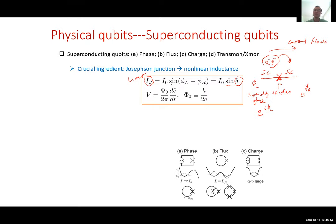If you apply voltage across the junction, the phase difference starts to increase. The voltage is proportional to a constant — the flux quantum divided by 2π — times the rate of change of the phase difference. So in some sense, the phase difference evolves at a rate proportional to the voltage across the junction. These are the two fundamental Josephson relations.